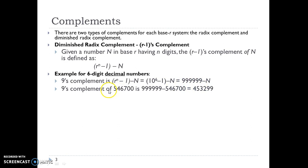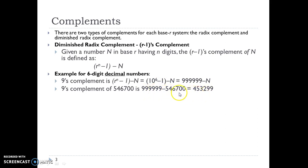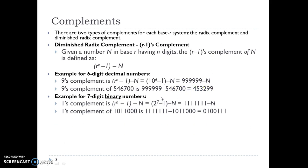So if we have to find the 9's complement of the number 546700, we have to subtract this number from 10 to the power 6 minus 1, which is six nines minus this number. That gives us the result shown. Now to also calculate using binary numbers: if we have a 7-digit binary number, we have to find 2 to the power 7 minus 1, which becomes seven ones.